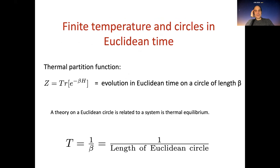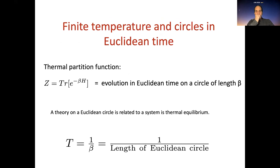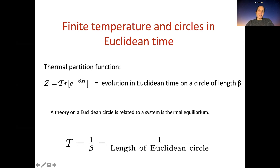One way to explain the temperature is the following. We forget momentarily about black holes and gravity and simply consider the problem of calculating the thermal partition function for some quantum system. What we need is the trace of e to the minus beta H, where H is the Hamiltonian of the system — that gives the thermal partition function. We can reinterpret that same calculation as evolution in Euclidean time over a circle of length beta. If instead of beta we had i times Lorentzian time, this would be the usual evolution operator. So if we take t to i·beta, we have evolution in Euclidean time. Taking the trace — identifying initial and final states and summing over all states — is equivalent to doing this evolution over a circle of length beta.